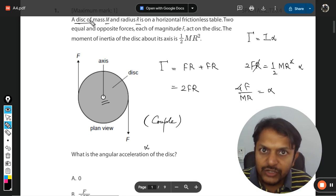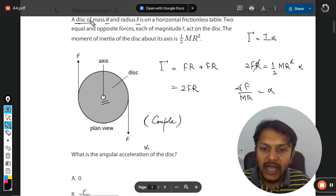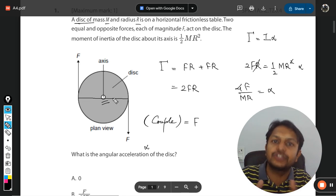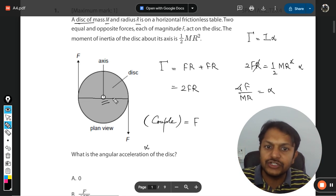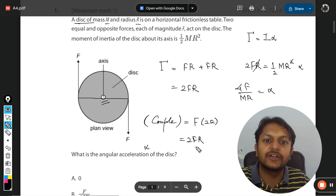A couple is defined as the product of the force and the perpendicular distance between the two forces. In this case, it is clearly 2R—that is, the diameter. So the torque can be taken to be 2FR. There are two different methods of finding torque.